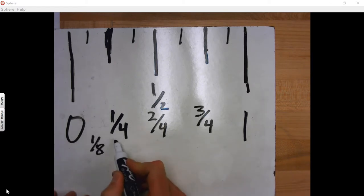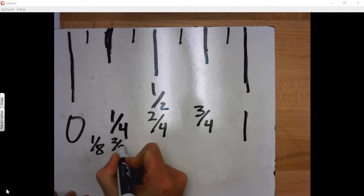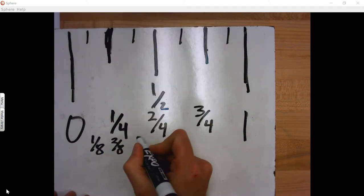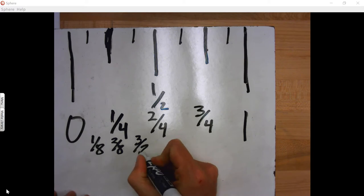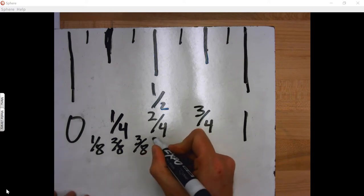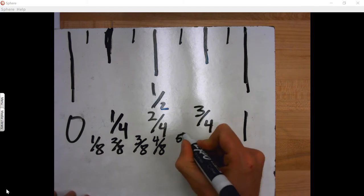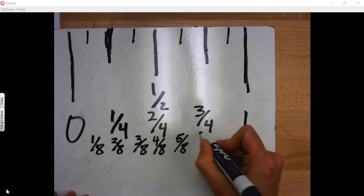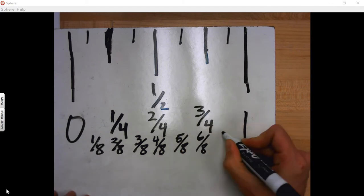What would this one be? Two-eighths. And then this one would be three-eighths. And this one would be what? Four-eighths. And then this one is five-eighths. And six-eighths. And seven-eighths.